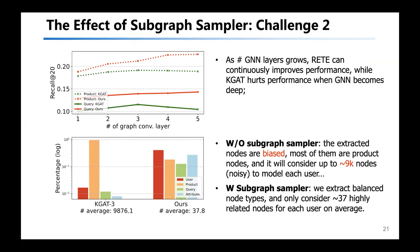Next, I will discuss the effect of the subgraph sampler. As shown in this figure, as we stack more layers of GNN, our RATI framework with the subgraph sampler can continuously improve prediction performance. In contrast, KGAT without the subgraph sampler shows degraded performance when the GNN becomes deeper. We also show the number and type distribution of sampled neighborhoods with and without the subgraph sampler. Our framework with the subgraph sampler constrains neighborhood aggregation to around 30 highly related nodes and samples a much more balanced distribution among different node types on the knowledge graph.